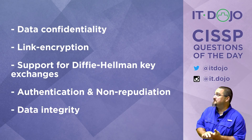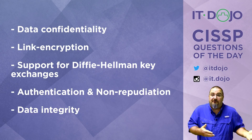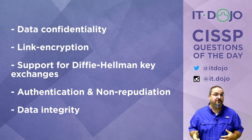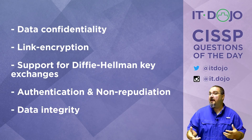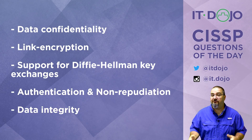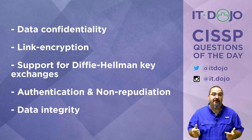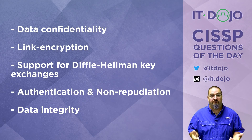The second choice is link encryption — nope. That's along the same lines as the first answer choice. While you may ultimately have link encryption as an end result of some PKI processes, it's not the public key infrastructure itself that's creating encryption for the link. It's simply providing you with a trusted way to create encryption between two endpoints.